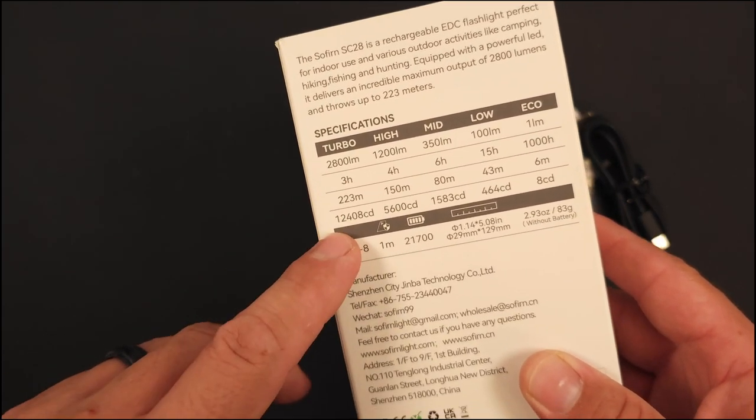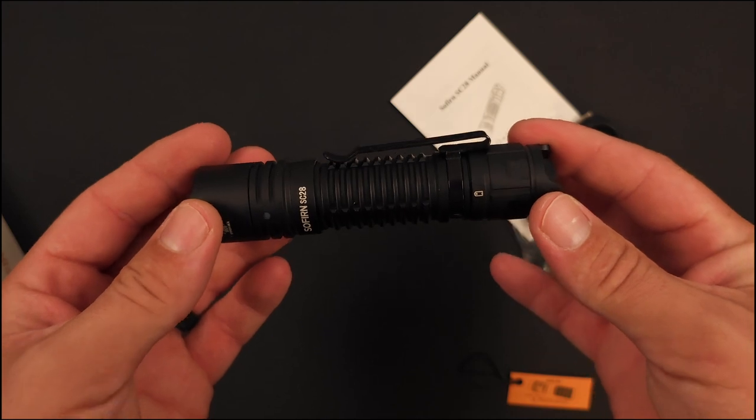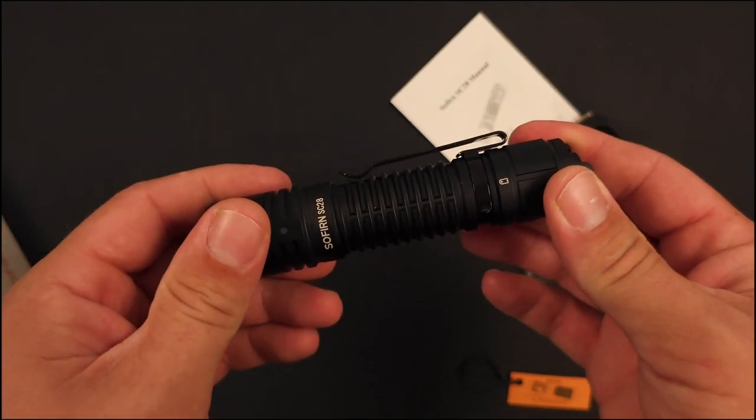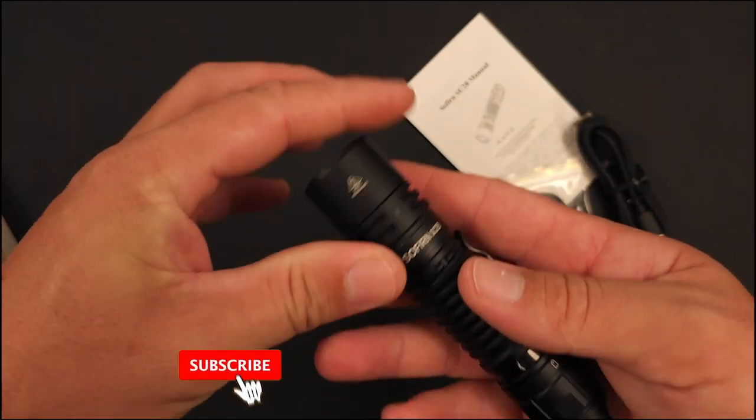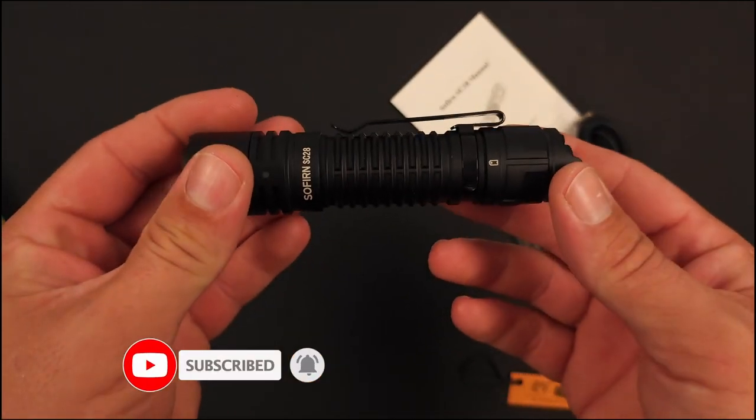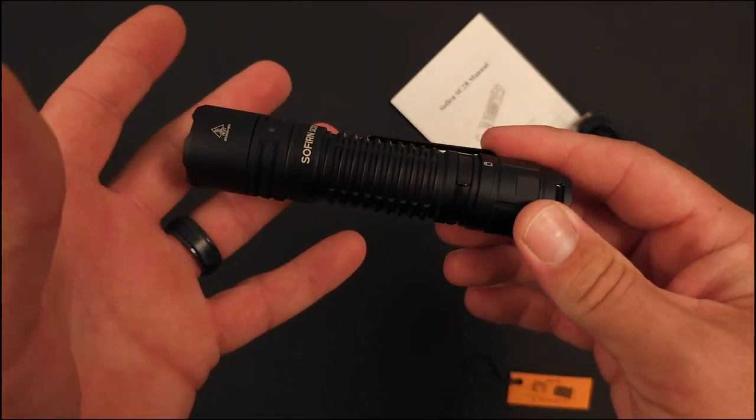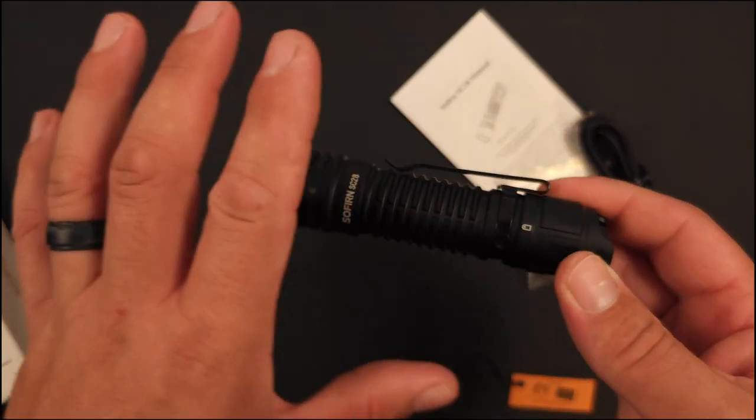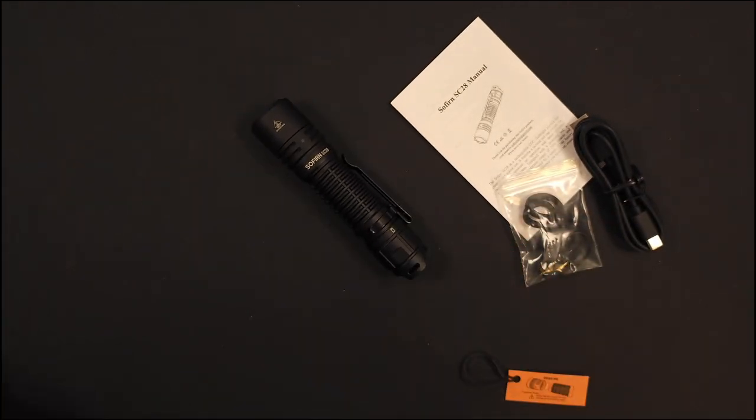This thing is IPX8 water resistance rated with an impact rating of one meter. You have a 29 millimeter head and a length of 129 millimeters. It's a pretty decent size light. However, given the size and that 21700 form factor, this does only come in at 83 grams without the battery in place. All in, I think that's really good.